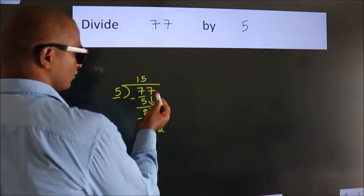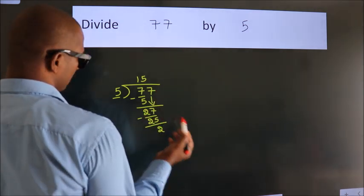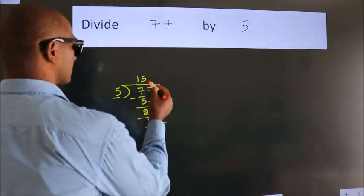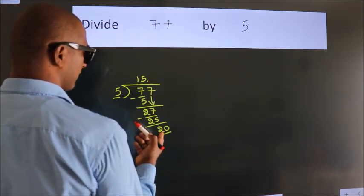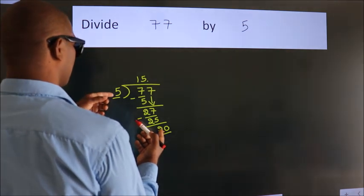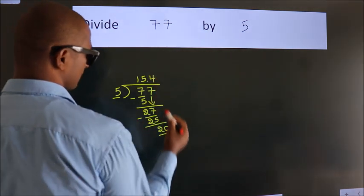After this, no more numbers to bring down. So what we do is, we put dot, take 0. So 20. When do we get 20 in 5 table? 5 fives 20.